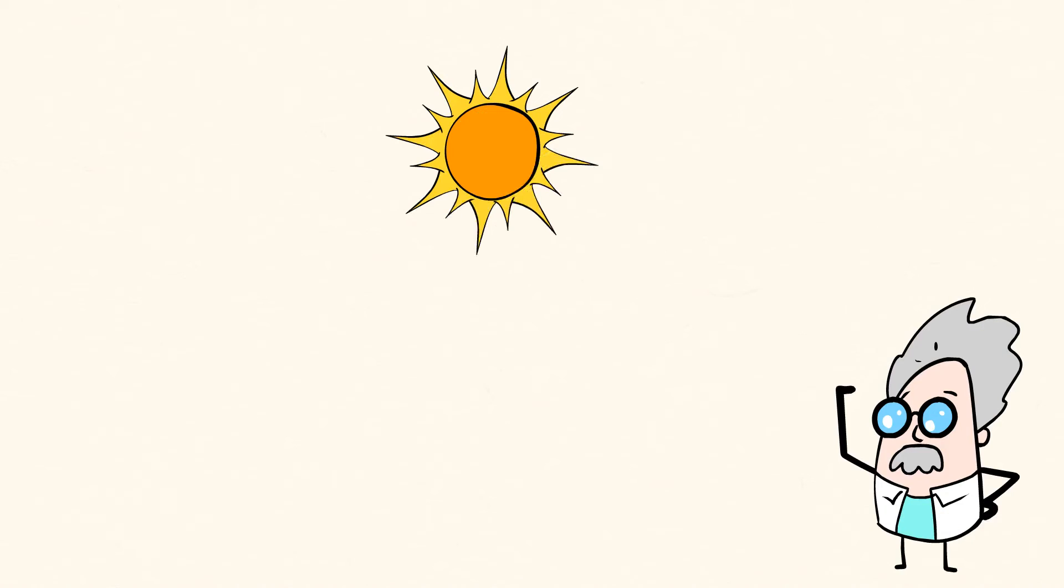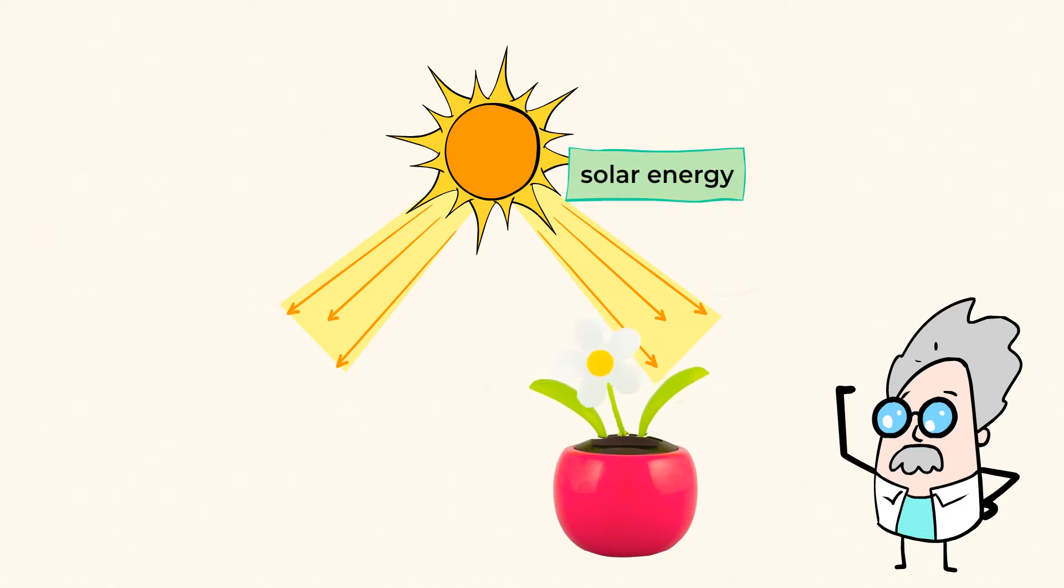And we humans have also figured out a smart way to use the light from the sun to create what we call solar energy. Check it out. This little toy moves back and forth. But where does it get the energy to do that from?